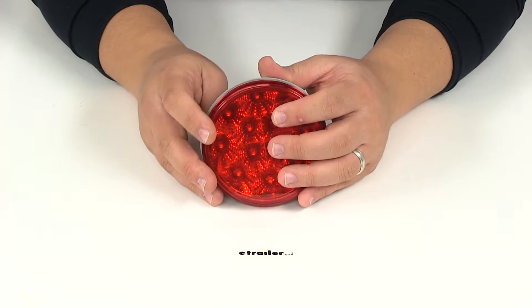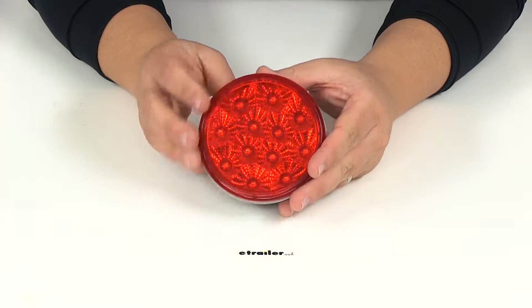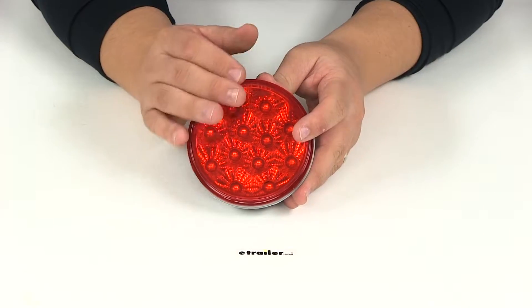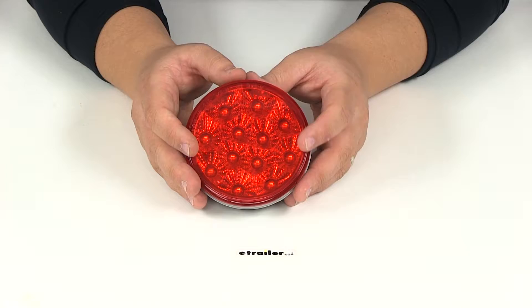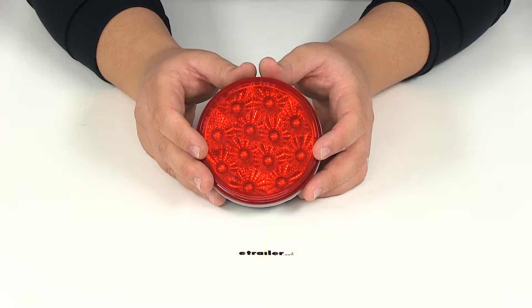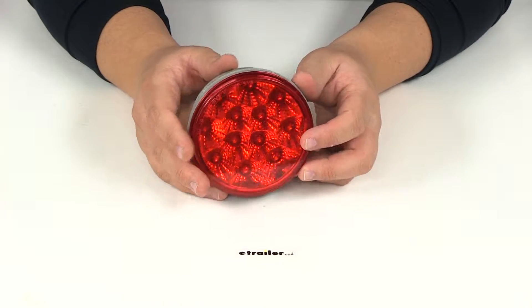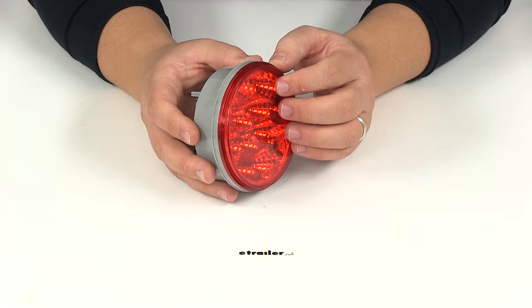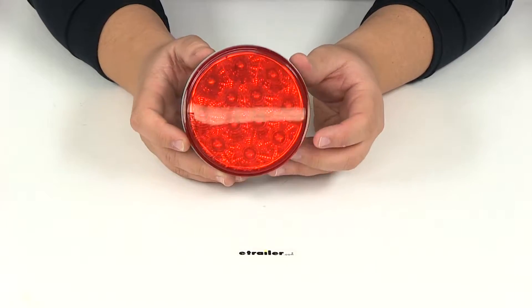It features 12 diodes. When it comes to power draw, the stop and turn function uses 0.121 amps at 28 volts and the tail light function uses 0.038 amps at 28 volts.